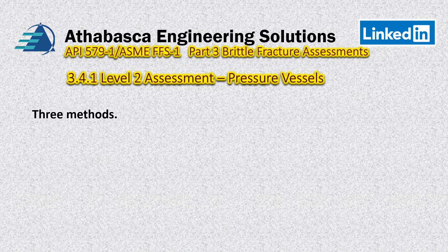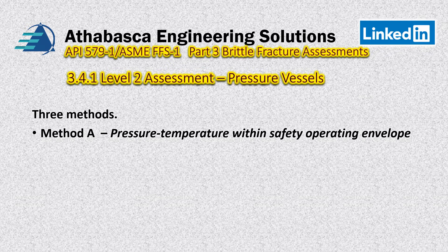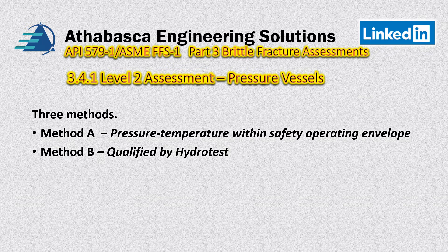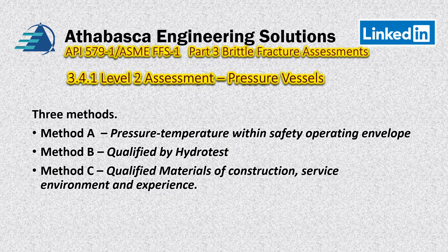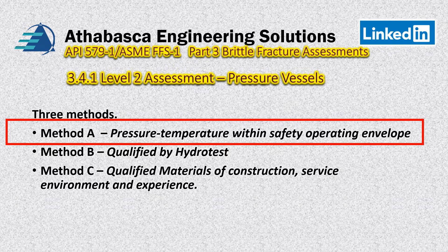So there are three methods. Method A is a pressure-temperature within a safety operating envelope. The second method is called a qualified-by-hydro-test method — we're doing proof testing. And method C is using qualified materials of construction based on service and environmental experience; you've done it before, you have experience with it, and you base your decision on that. The one we're going to focus on is method A, which leads into the next episode called example 3.5.